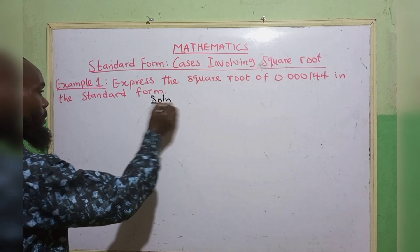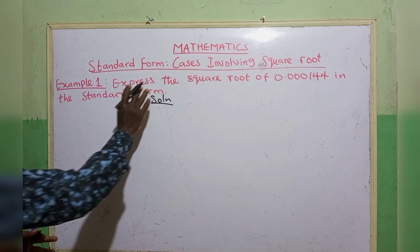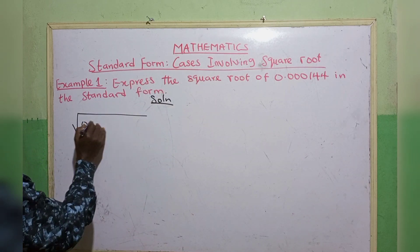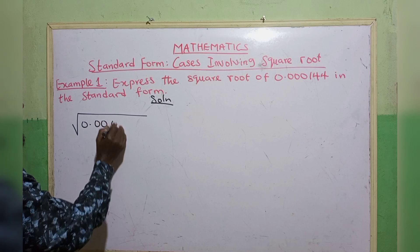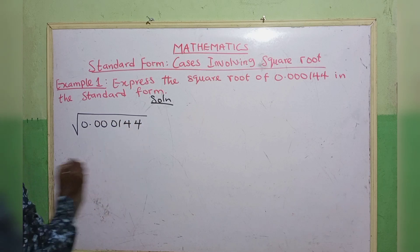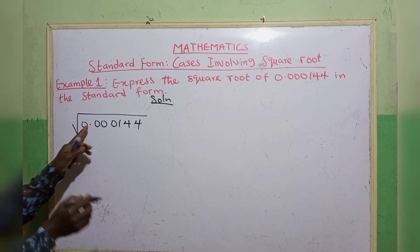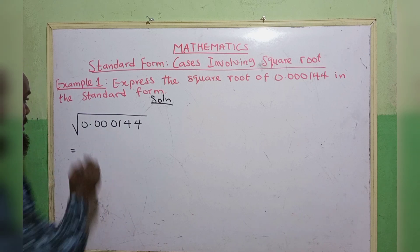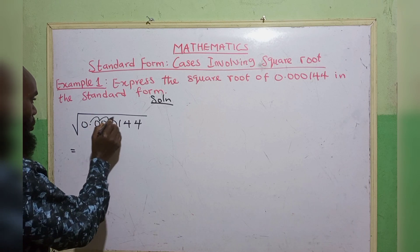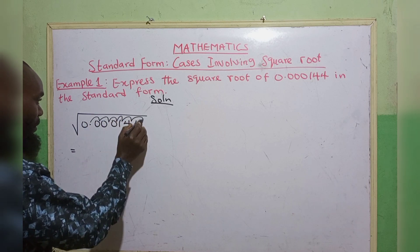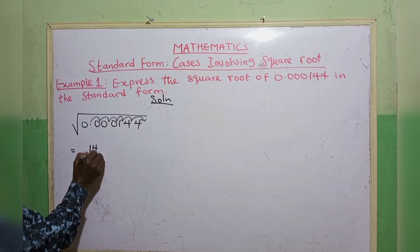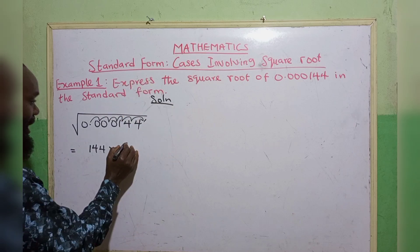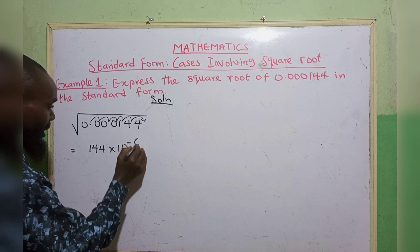So we have the square root of 0.000144. The first step is to move the decimal point away from the digits. We count 1, 2, 3, 4, 5, 6 places. That gives us 144 multiplied by 10 raised to the power of negative 6, since we are moving backward 6 times.